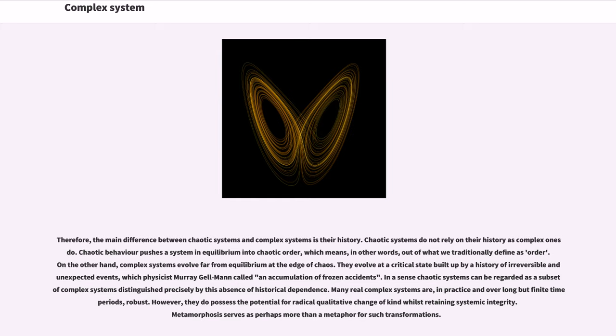Therefore, the main difference between chaotic systems and complex systems is their history. Chaotic systems do not rely on their history as complex ones do. Chaotic behavior pushes a system in equilibrium into chaotic order, which means, in other words, out of what we traditionally define as order. On the other hand, complex systems evolve far from equilibrium at the edge of chaos. They evolve at a critical state built up by a history of irreversible and unexpected events, which physicist Murray Gell-Mann called an accumulation of frozen accidents.